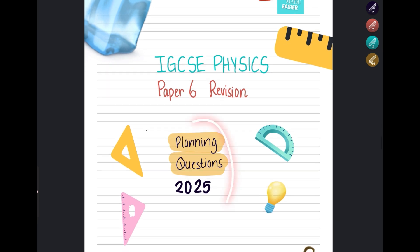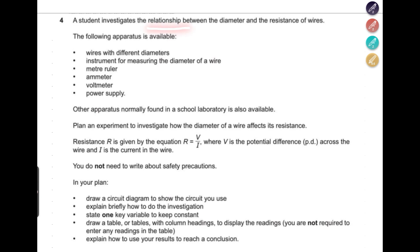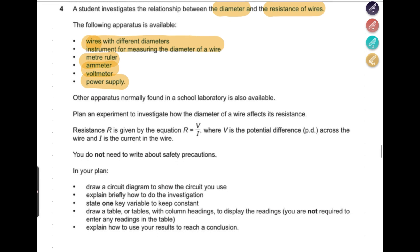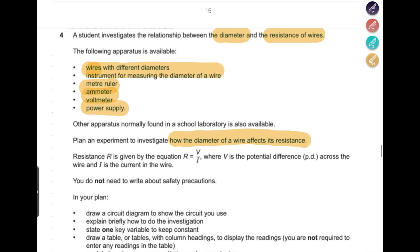Let's start with the planning questions from 2025. The first question says that a student investigates the relationship between diameter and resistance of wires. The student is comparing the diameter of the wire and the resistance of the wire. The following apparatus is available: wires with different diameters, an instrument to measure the diameter of the wire, a meter rule, ammeter, voltmeter, and a power supply. Plan an investigation to determine how the diameter of the wire affects its resistance. What is the independent variable? That is going to be the diameter of the wire.